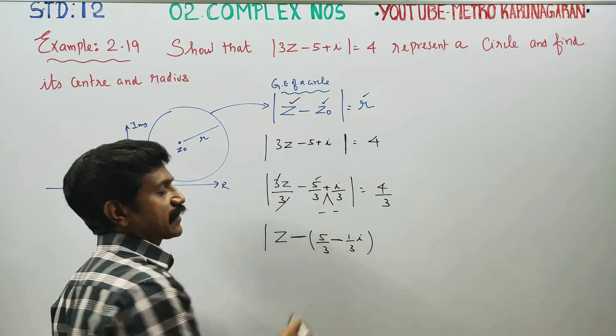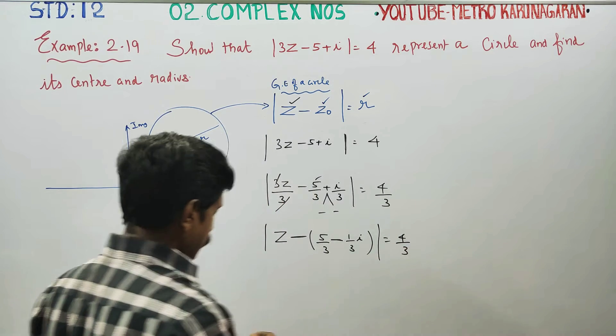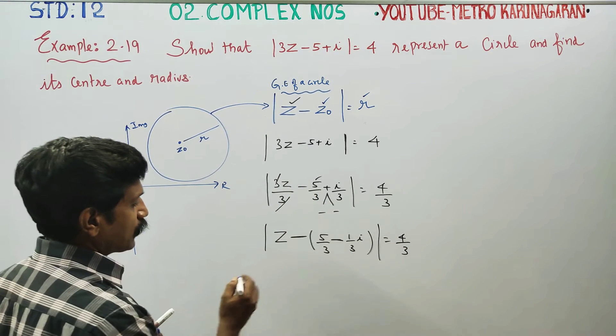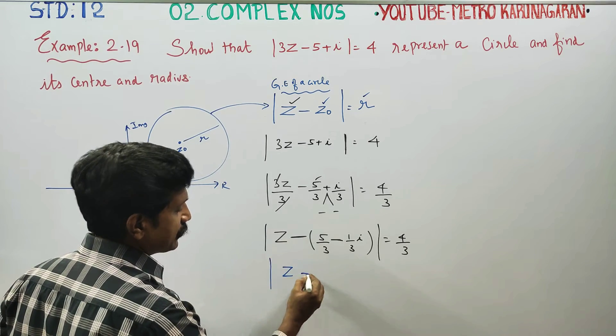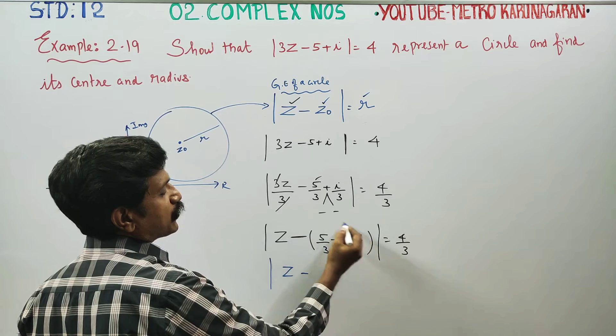Separating i by 3, this is equal to 4 by 3. Now you can match. Modulus |Z minus 5/3 minus 1/3 i| is equal to 4/3.